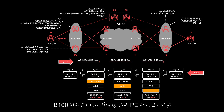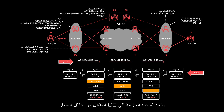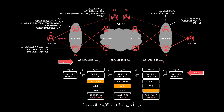Then, according to the function ID B100, the egress PE gets the corresponding VPN routing table, searches for the matching route, and forwards the packet to the corresponding CE. This is how SRv6 TE works. From this process, we can see that a segment list in the SRH indicates a specific path in order to meet specific constraints and service quality requirements.